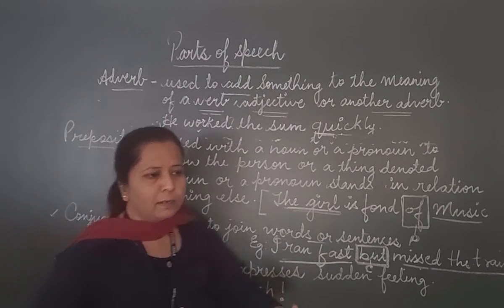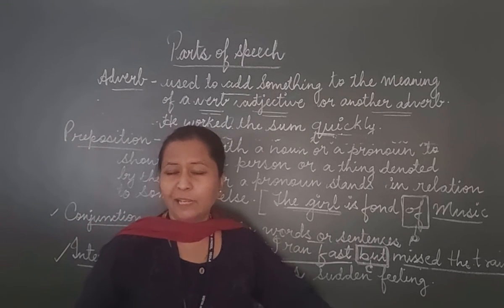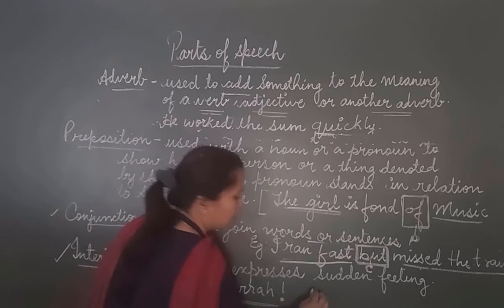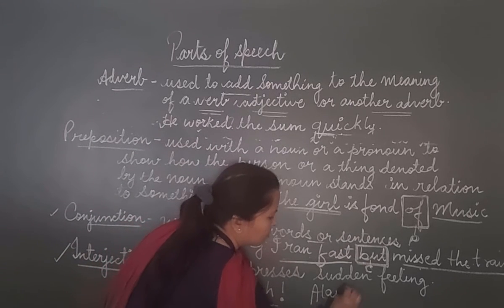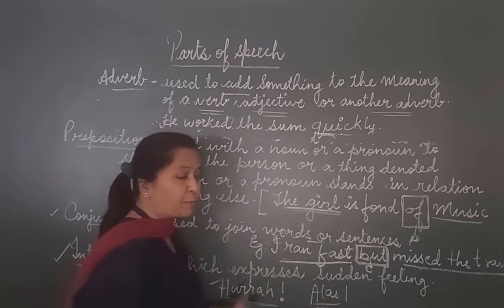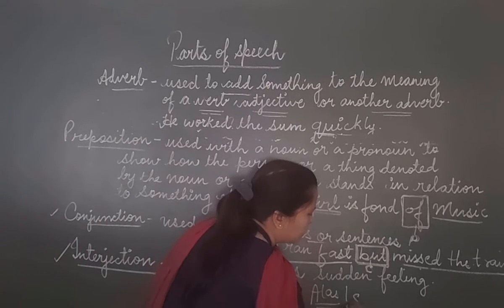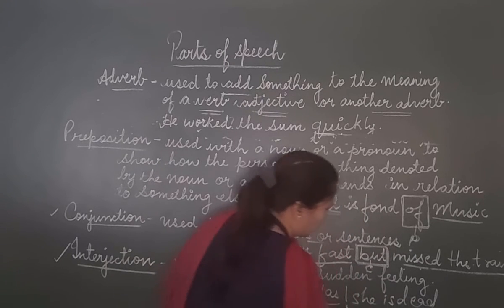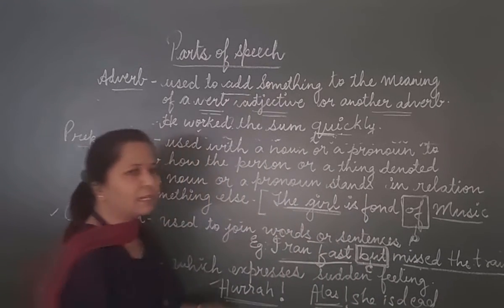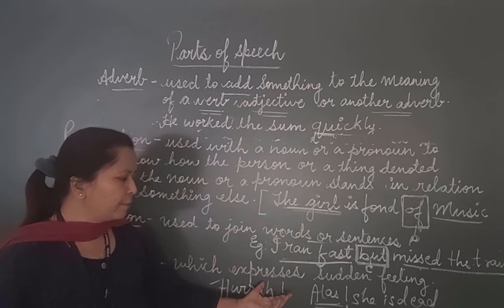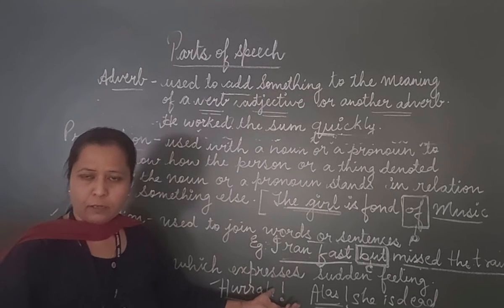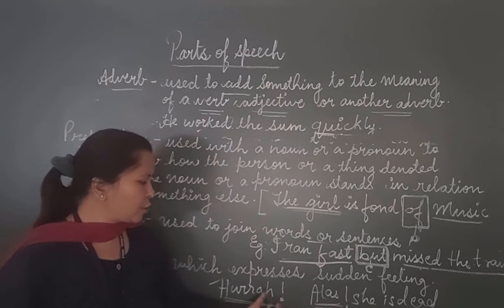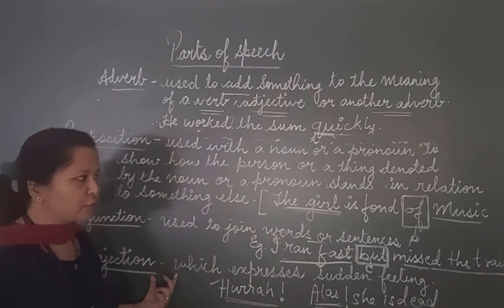Another example: when someone has passed away, a demise has occurred, we use the word 'Alas'. It is a sudden sadness — an expression comes out: 'Alas! She is dead.' So 'Alas' becomes an interjection. When a sudden feeling — of joy or sadness — comes out, that expression is called an interjection.